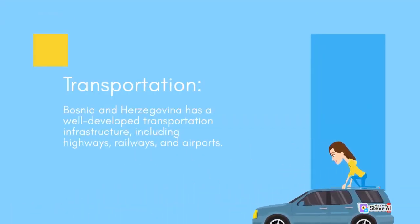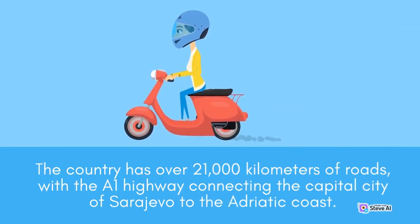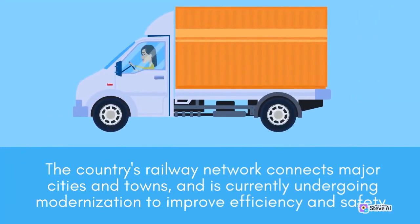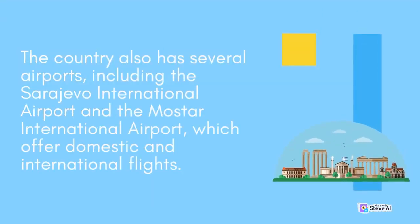Bosnia and Herzegovina has a well-developed transportation infrastructure, including highways, railways, and airports. The country has over 21,000 km of roads, with the A1 highway connecting the capital city of Sarajevo to the Adriatic coast. The country's railway network connects major cities and towns and is currently undergoing modernization. The country also has several airports, including the Sarajevo International Airport and the Mostar International Airport, which offer domestic and international flights.